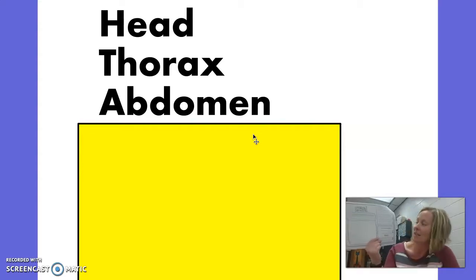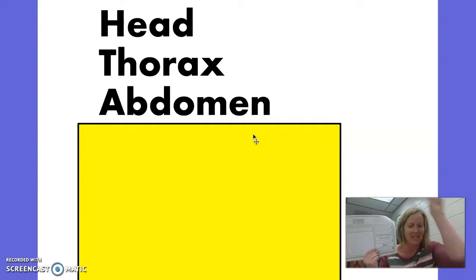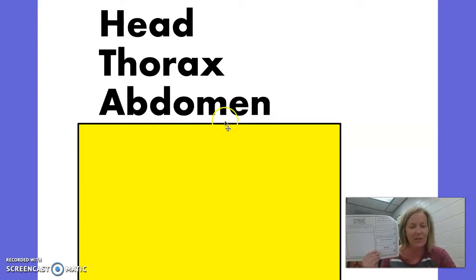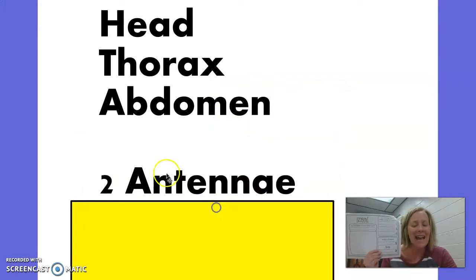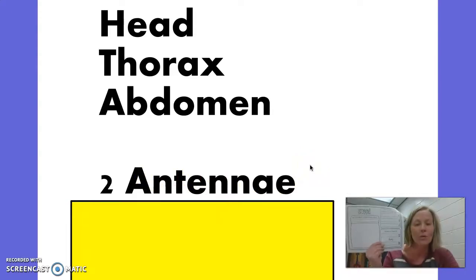All right, boys and girls, now down here it says, Insects have two blanks. What were those things on the top of their head? They had two of them. Some were short and some were long. Antenna. So you're going to write the word antenna right here on this line. Because insects have two antennae.